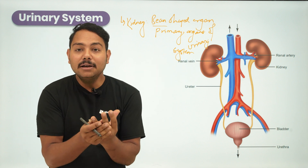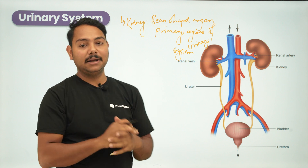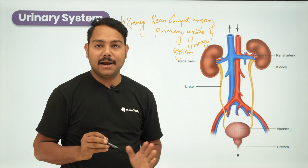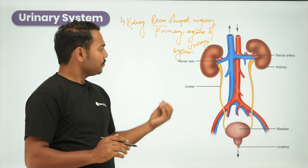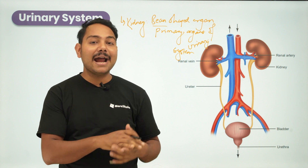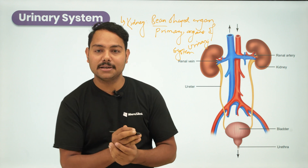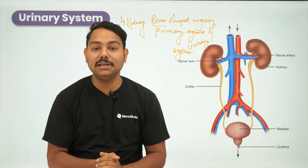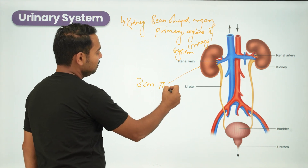The kidneys are located between the 12th thoracic and 3rd lumbar vertebrae, one on each side. The left kidney is usually slightly lower. In an adult, each kidney is approximately 3 cm thick.